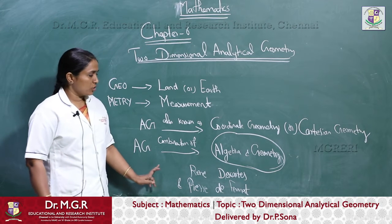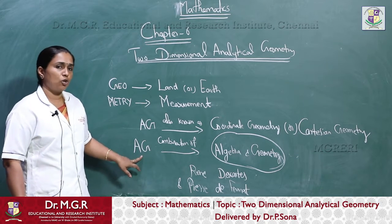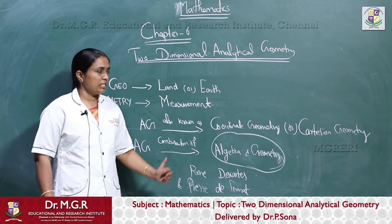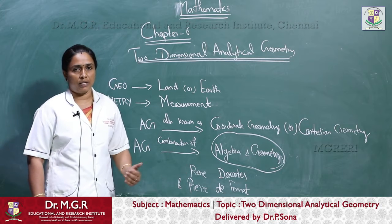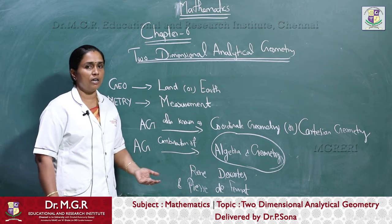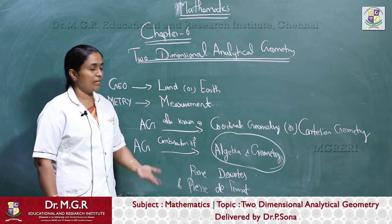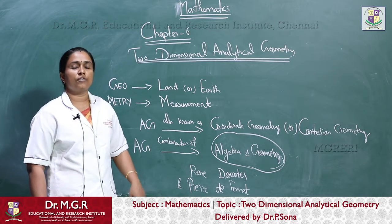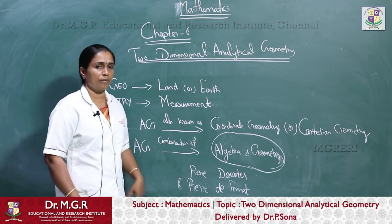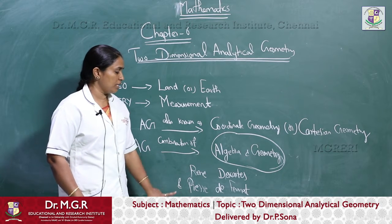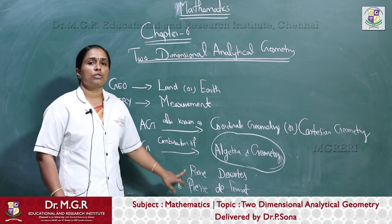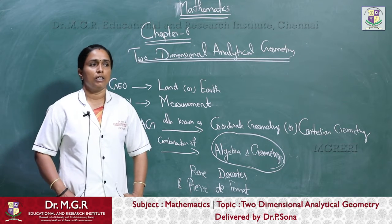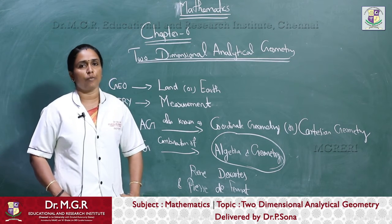Analytical geometry is mainly the combination of algebra and geometry. A systematic study of geometry by the use of algebra was carried out first by the celebrated philosophers as well as mathematicians — French mathematicians Rene Descartes and Pierre de Fermat. So the resulting combination of analysis and geometry is now referred to as analytical geometry.